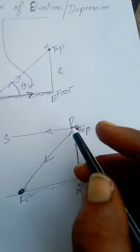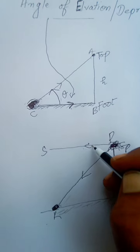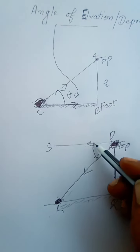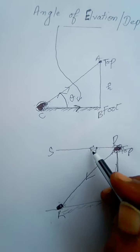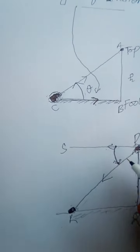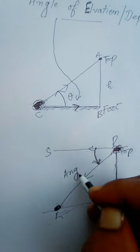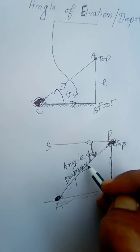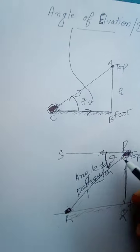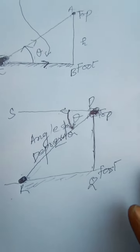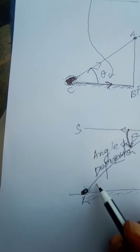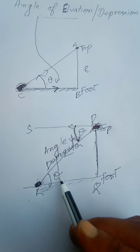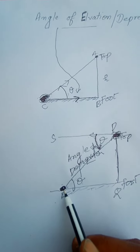Next time your line of sight is PR. Then, from the earth's surface parallel line to the line of sight PR, this depression of your vision — this angle — is known as angle of depression.